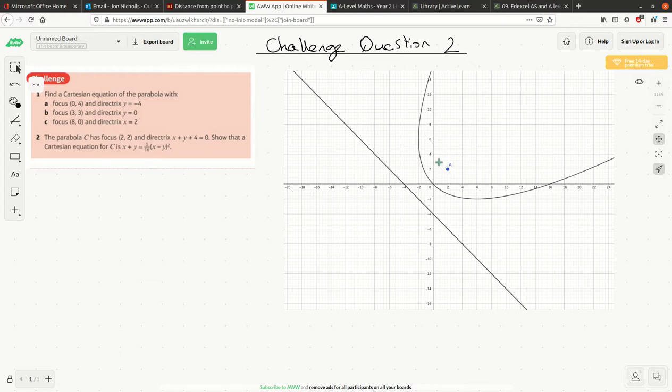You've got to think about what it does to the a value though, because if you rotate that point, that focus there, a, by 45 degrees, it's not going to end up on 2, that certainly would be perhaps a common misunderstanding to think about. But anyway, let's try and do it a different way.